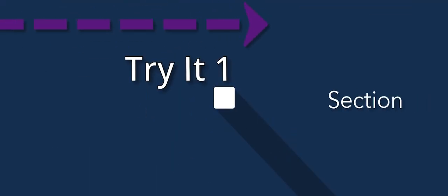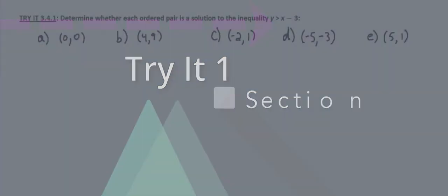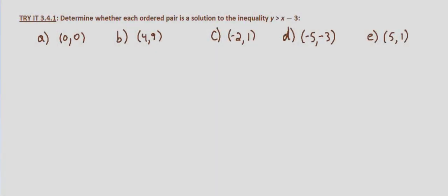In this Tried exercise we're given an inequality and we're asked to determine if ordered pairs are solutions to the inequality. The inequality we're given is y is greater than x minus 3.